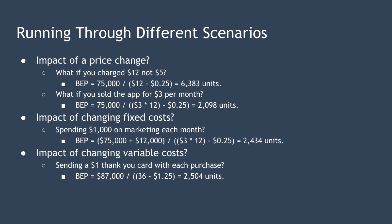This is the real benefit of break-even analysis — allowing you to run through several scenarios to understand what price or cost structure is going to work best for you. Now let's look at what would happen if we changed our fixed costs. Suppose you wanted to allocate $1,000 per month to influencer marketing. That spending would add $12,000 — $1,000 times 12 months — to your fixed costs, resulting in needing to sell 2,434 units to break even, about an additional 350 units.